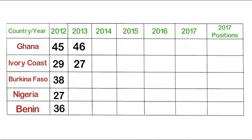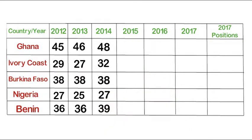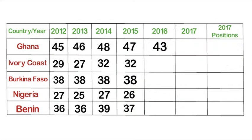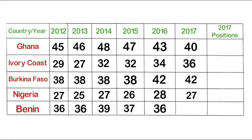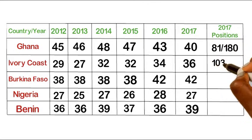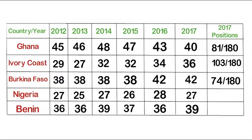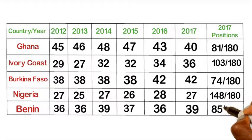Let me show you a representation of the performance in corruption of some countries over the last six years in the sub-Saharan region. As at 2017, Burkina Faso was the least corrupt country at 74th position, followed by Ghana at 81st position. The most corrupt country was Nigeria at 148th position. Ivory Coast and Burkina Faso show consistency and progress, but countries like Ghana, Benin and Nigeria remain inconsistent.